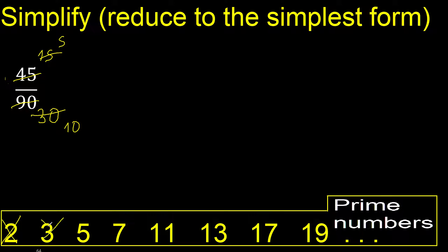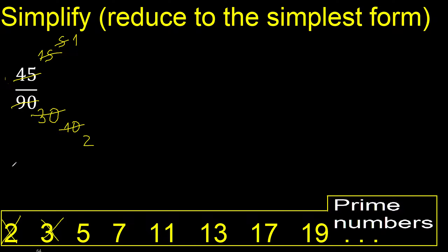Cannot be divided by 3, but divided by 5: divided by 5 is 1, divided by 5 is 2.